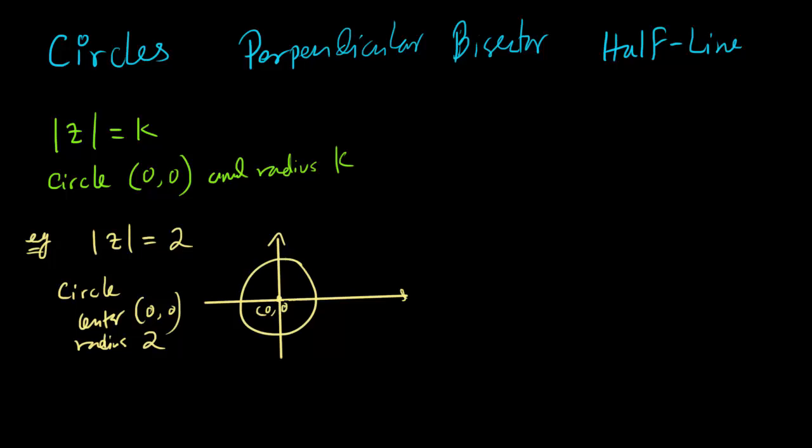And this would be the circle. The center would be (0,0) and the radius would be 2. So this is 2, this is minus 2, this is 2, this is minus 2. That's it.